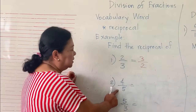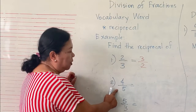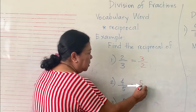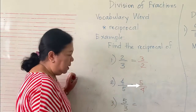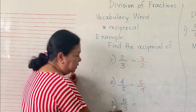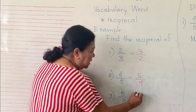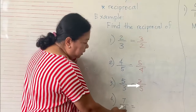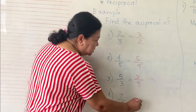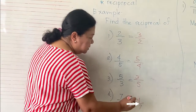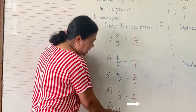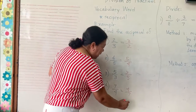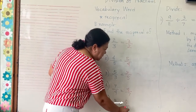Another example: what is the reciprocal of four over five? Simply, five over four. Another: five over three — the reciprocal is three over five. Seven over four — the reciprocal is four over seven. And nine over five — the reciprocal is five over nine.